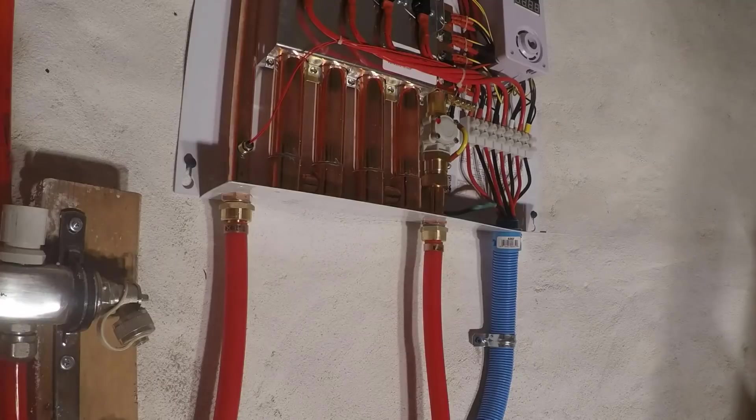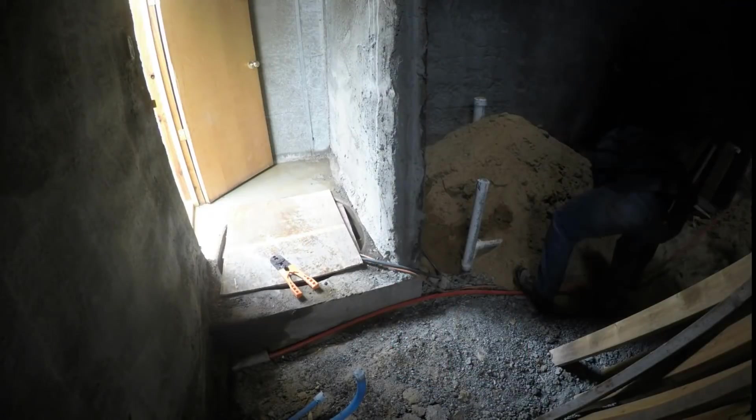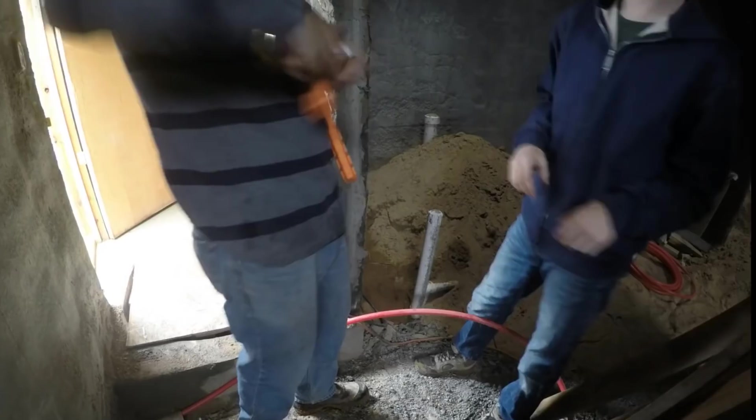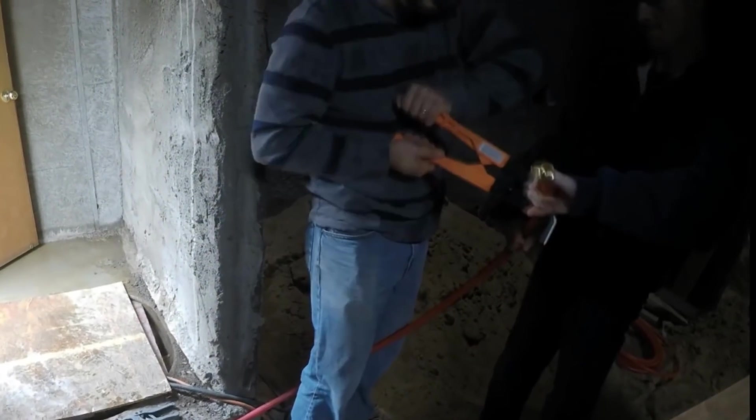For now, this temporary hot water line runs up through the floor and into the bedrooms where we want to make stucco this winter. I ended up putting a garden hose fitting on the end of it.